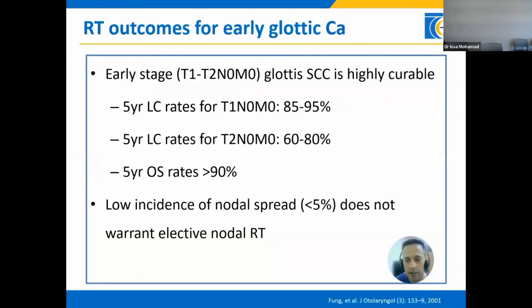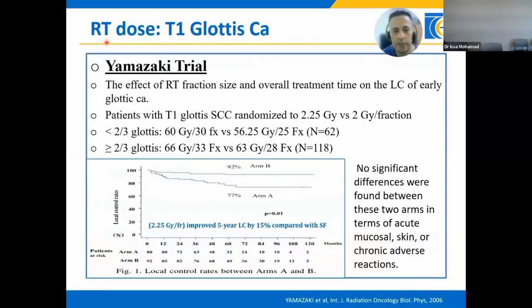Regarding radiotherapy outcomes for early glottic cancer, the five-year local control rates for T1 disease range between 85% to 95%, while for T2 disease it is 60% to 80%. T2 is a heterogeneous group, which explains this wide range. The five-year overall survival rate is more than 90%. When treating these patients with radiation therapy, we do not electively irradiate the neck given the low incidence of nodal spread.